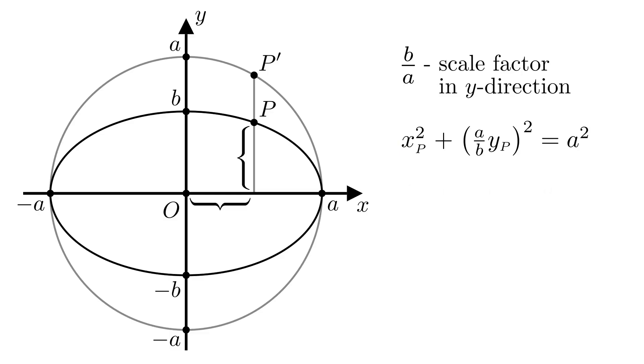To simplify this, we square what's inside the parenthesis and divide both sides by a squared, which gives us xP squared over a squared plus yP squared over b squared is equal to 1.